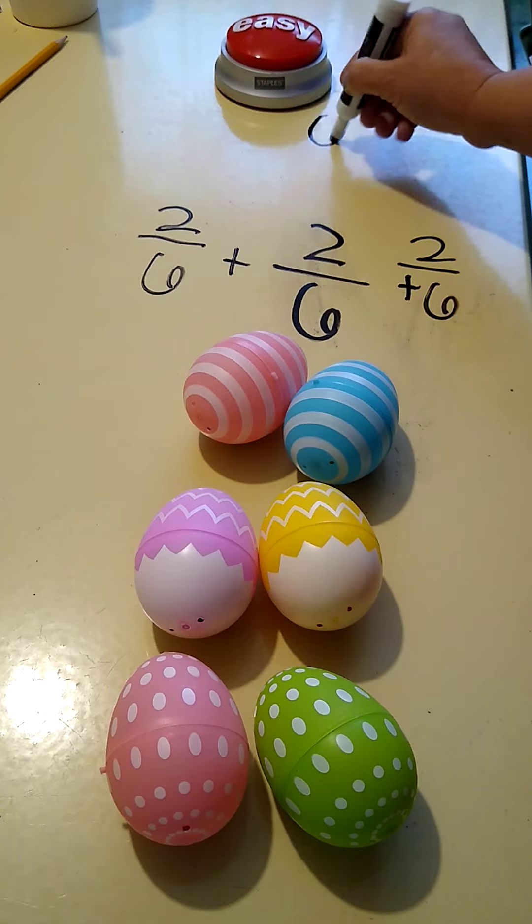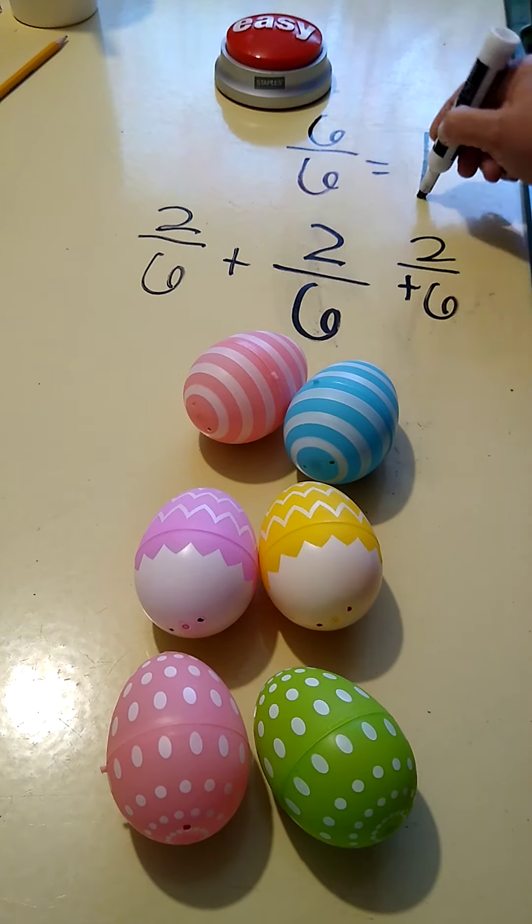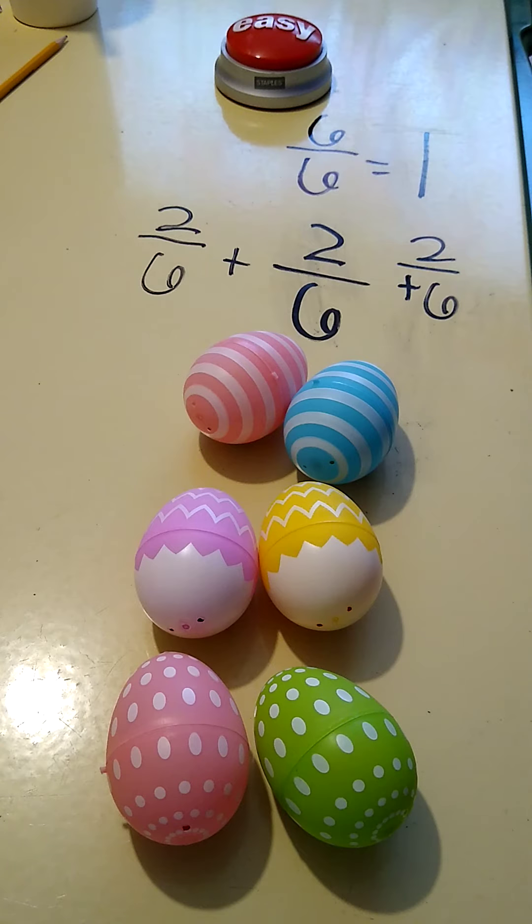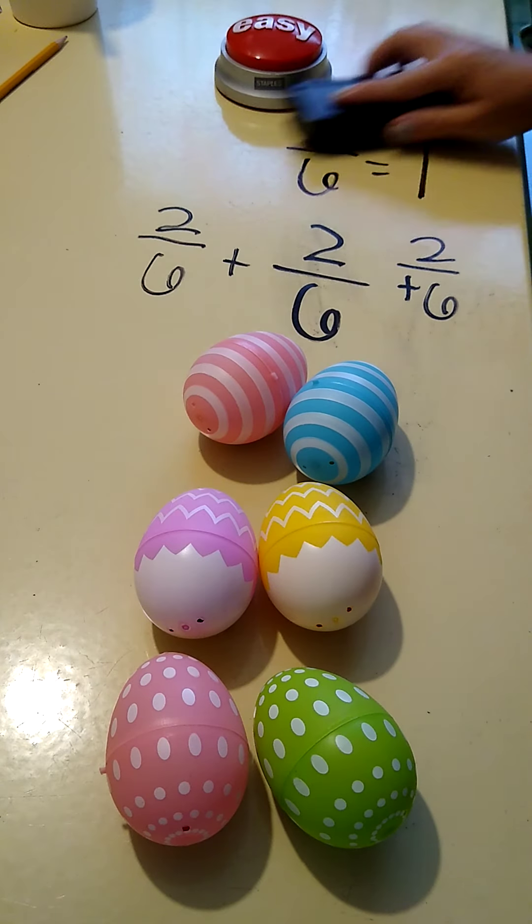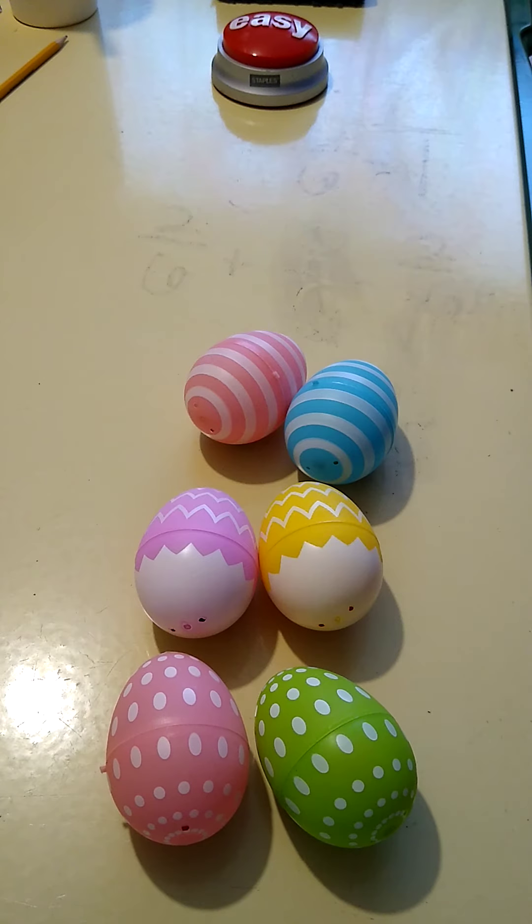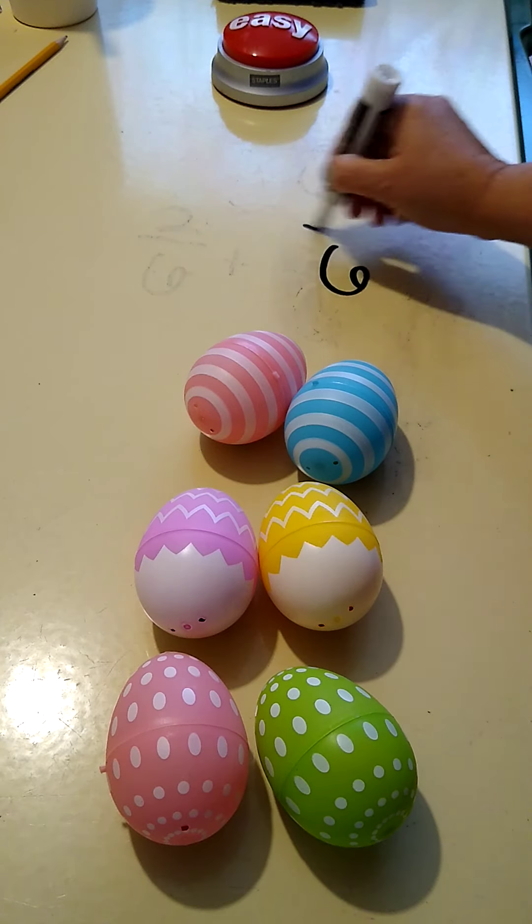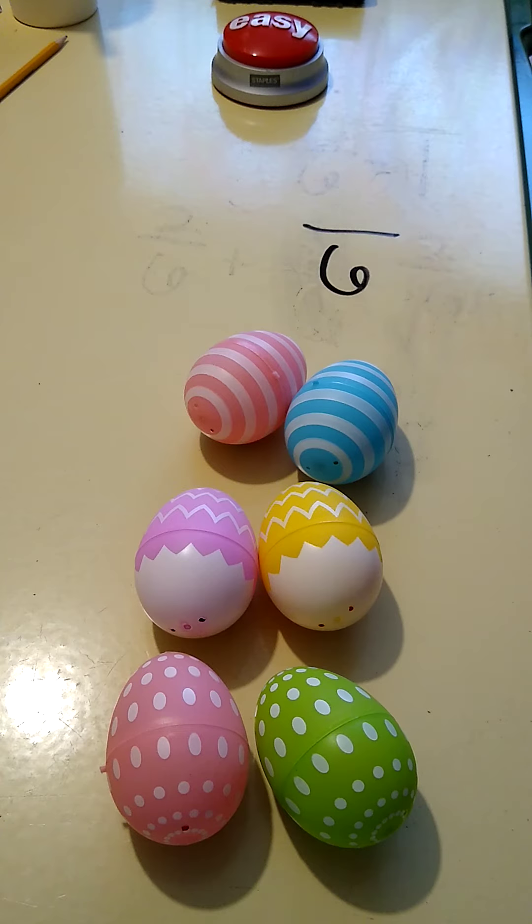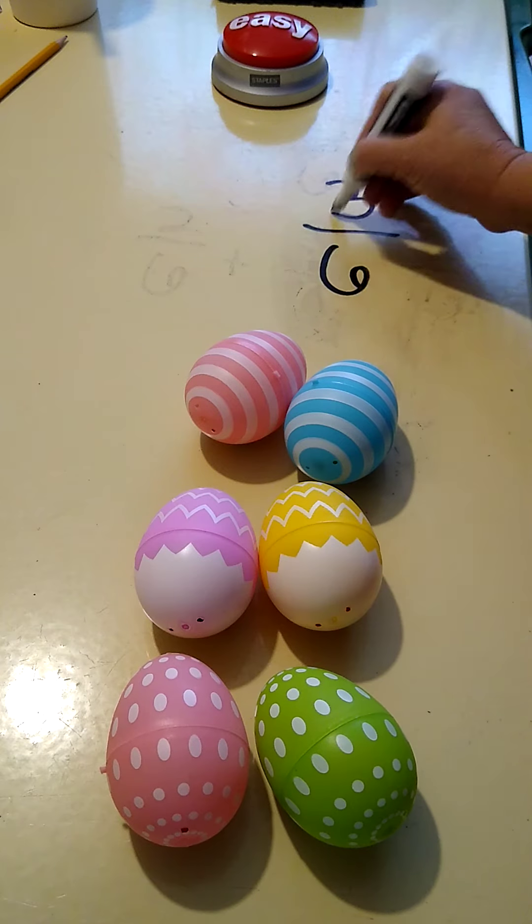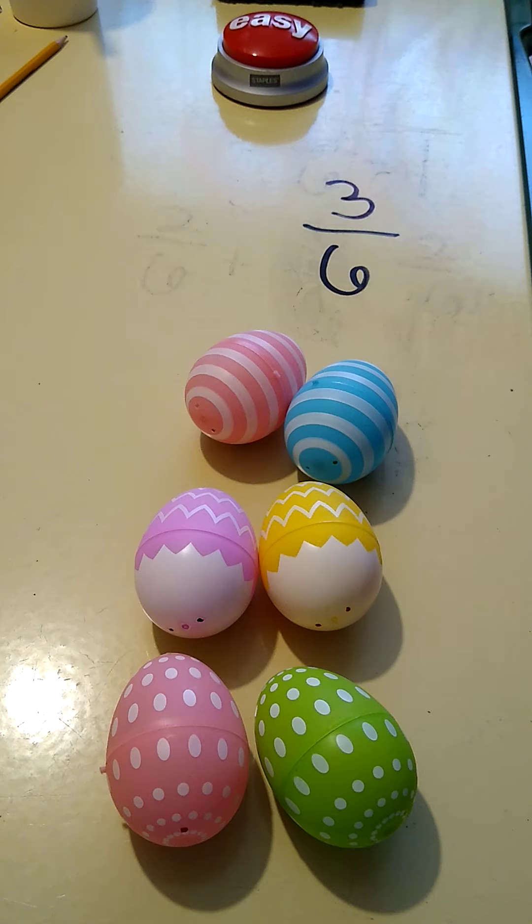So I'm still working with my one whole group of eggs. We're still going to look at our sixths, so I'm going to have sixths as my denominator. Now let's think about colors. What fraction of this group of eggs is pink? I see one, two, three that are pink, so three-sixths of my eggs are pink.